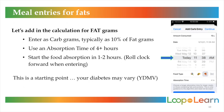Now for meal entries for fat: enter 10% of fat grams as carb grams. Use an absorption time of 4 plus hours, and once again start the food absorption time 1 to 2 hours into the future. This 10% figure is just a starting point. Your diabetes may vary.